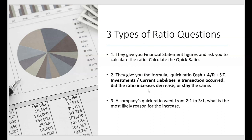For example, maybe cash was received from an inventory sale, and you'd have to determine the impact on the quick ratio. For the third type of ratio question, they tell you the ratio increased from two to one last year to three to one this year and ask what is the most likely reason for the increase. They'll probably provide the formula and then offer answer choices like: is it because sales returns were not properly recorded, or because consignment shipments were recorded as sales?